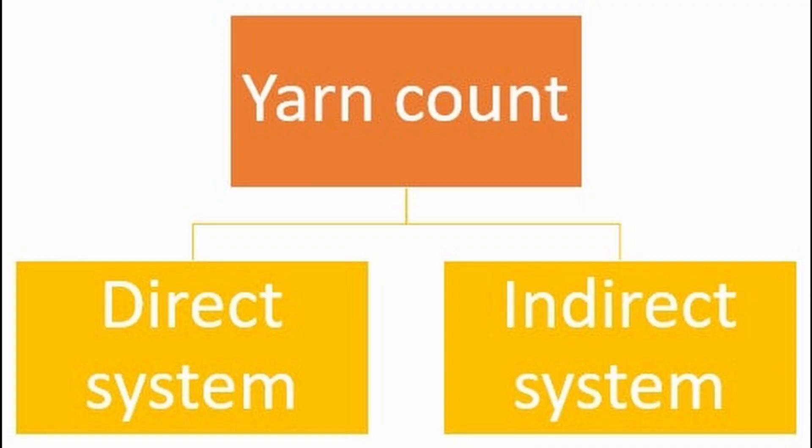Today in this episode we're going to talk about the direct system, because remember there are two systems to recognize the title and the number of the yarn. The first one is the direct system and the second one is the indirect system.